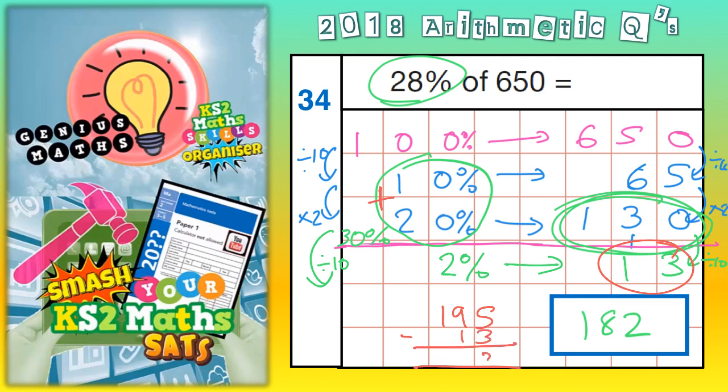5 take 3 is 2. 9 take 1 is 8. 1 take nothing is 1. 182, that's the same answer as we got, doing it a slightly different way earlier on. So, that's the same answer as we got.